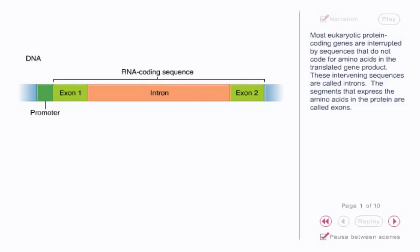Most eukaryotic protein-coding genes are interrupted by sequences that do not code for amino acids in the translated gene product. These intervening sequences are called introns. The segments that express the amino acids in the protein are called exons.